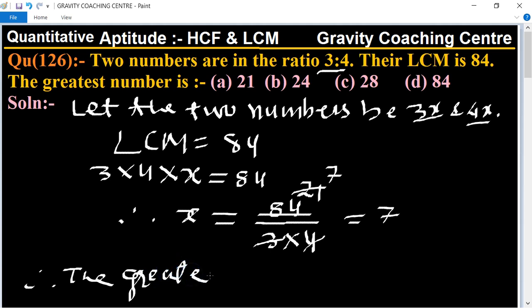The greatest number is 4x, so 4x equal to 4 multiply 7 equal to 28, which is the required answer. So option C is the correct answer.